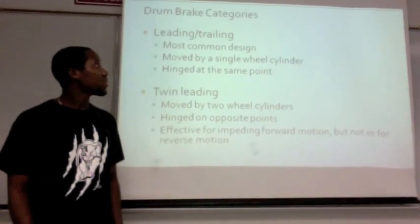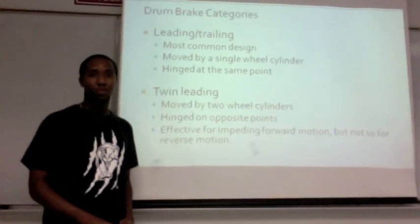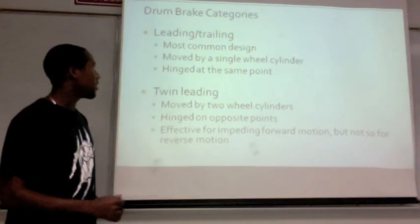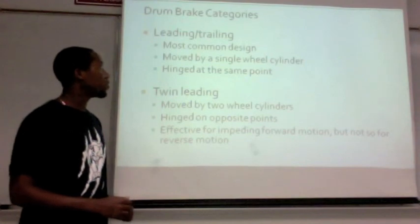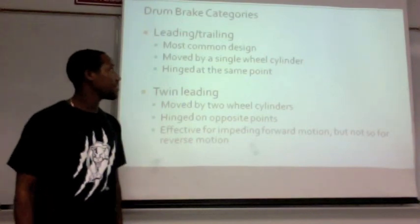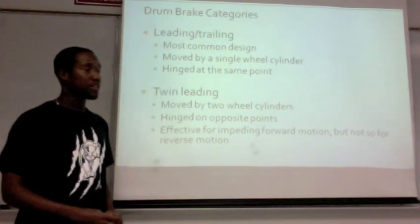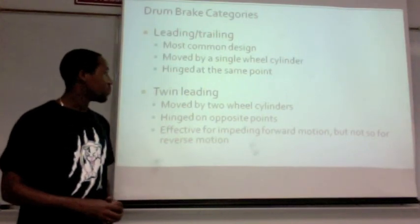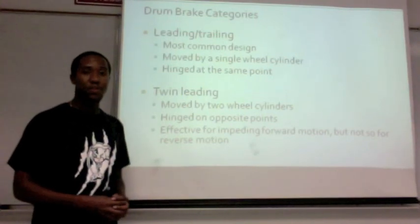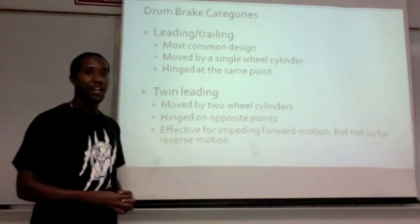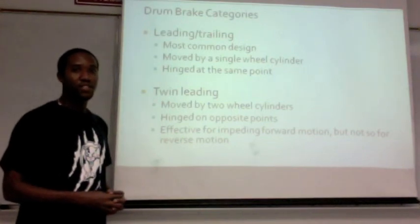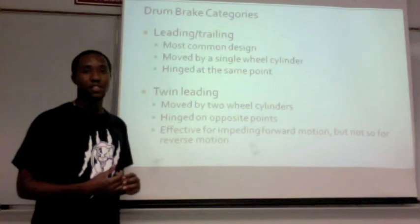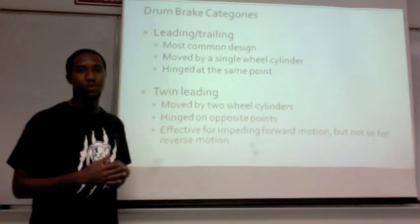There are two different types of categories of drum brakes: the leading-trailing and the twin-leading. The leading-trailing is the most common design. It's moved by one wheel cylinder and it's hinged at the same point. The twin-leading is moved by two wheel cylinders, hinged at opposite points. The twin-leading is not as efficient as the leading-trailing one because in reverse it doesn't stop as well.